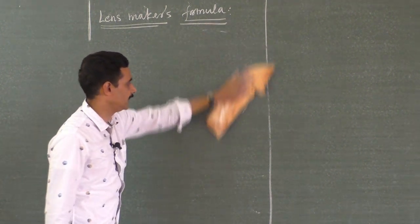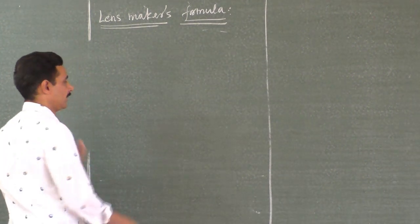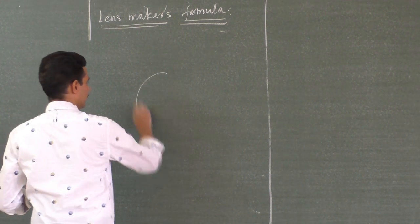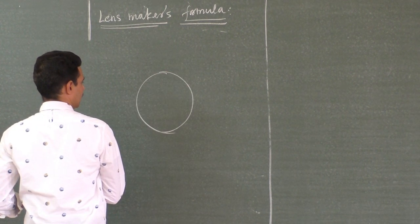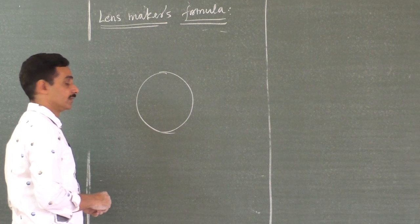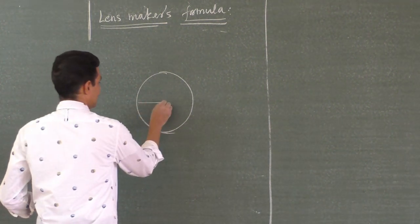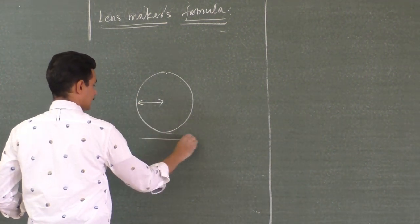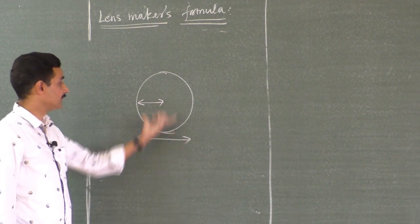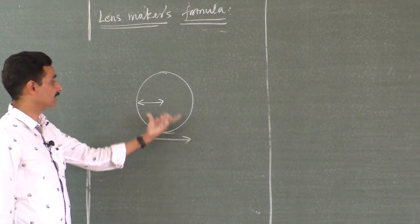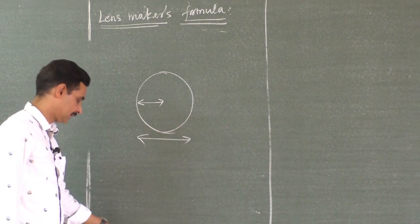What about a glass sphere? In the previous class we solved one problem involving a glass sphere. Can you call a glass sphere a thin lens? Never — because its radius is smaller while its thickness is larger. The thickness itself is much larger than the radius. It is not a thin lens.